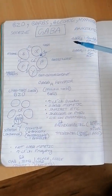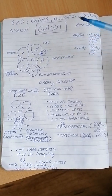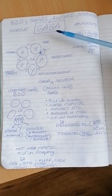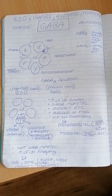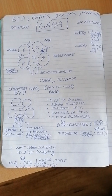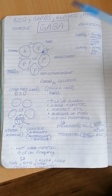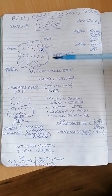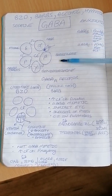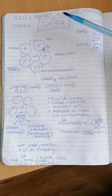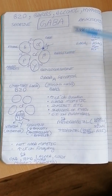GABA receptors are of various types present in our brain: GABA-A, GABA-B, and GABA-C. Right now we are talking about GABA-A, because a few drugs like benzodiazepines, barbiturates, and alcohol usually work on GABA-A. Of course they can work on GABA-B and GABA-C also, but their main effect is on GABA-A, making it much more clinically important.